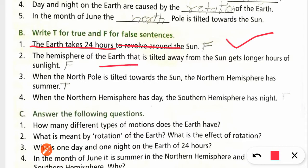The hemisphere of earth that is tilted away from the sun gets longer hours of sunlight. False, no. The away part will get less. The front part that is facing the sun will get more light.